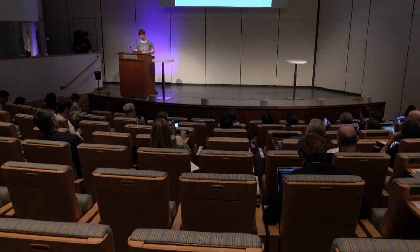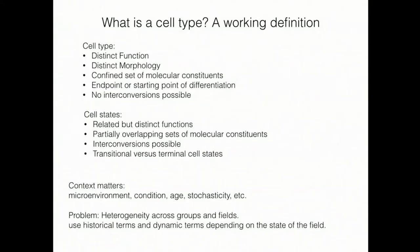One thing that emerged as consensus is that function should play a role. Distinct cell types should be distinguishable by different functions — they could be overlapping, but in some way they should be different.